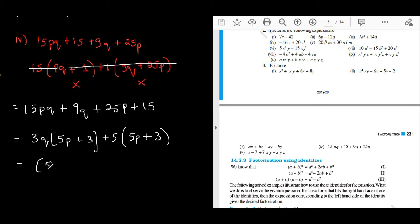So I will take 5P plus 3 as common. What is remaining? 3Q plus 5 are the factors.